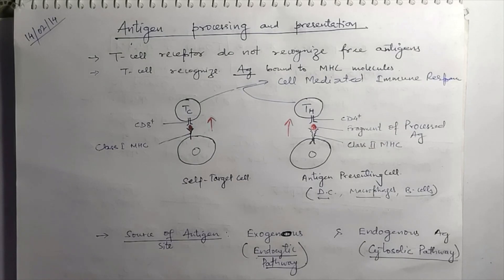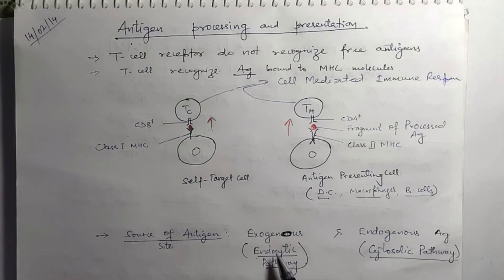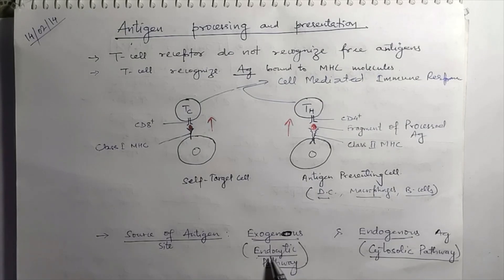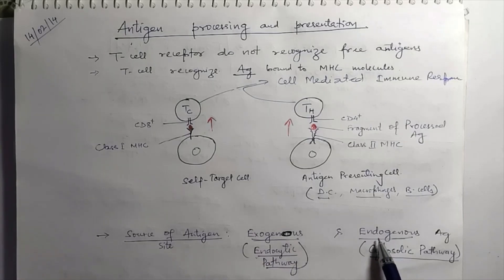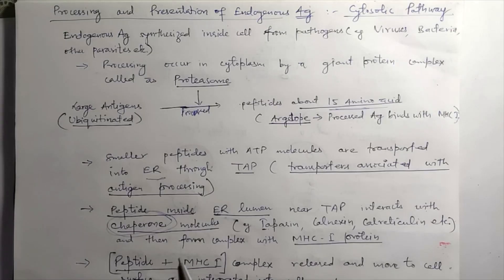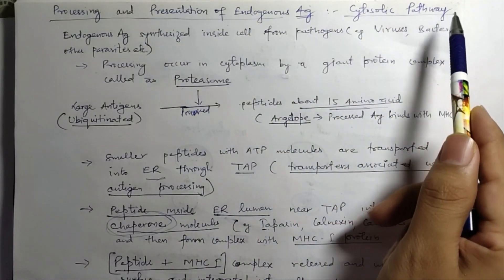The source of antigen, or the site from where antigen is derived, is very important for these cells to process and present it to T cytotoxic or T helper cells. Antigens can either be exogenous or endogenous. Exogenous antigens are processed and presented by a pathway called the endocytic pathway, and endogenous antigens are processed and presented by a pathway called the cytosolic pathway.